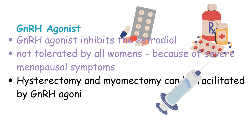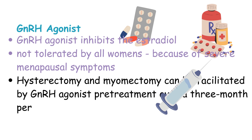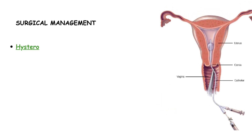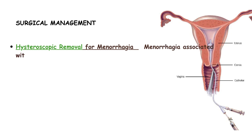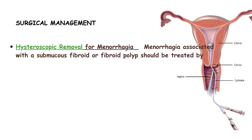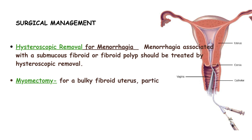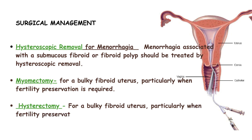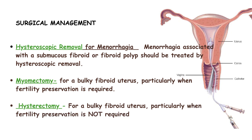Hysterectomy and myomectomy can be facilitated by GnRH agonist pre-treatment over a three-month period to reduce the bulk and vascularity of fibroids. There are three surgical options. First is hysteroscopic removal — menorrhagia associated with a submucous fibroid or fibroid polyp should be treated by hysteroscopic removal. Second is myomectomy — for a bulky fibroid uterus, particularly when fertility preservation is required. Third is hysterectomy — for a bulky fibroid uterus, particularly when fertility preservation is not required.